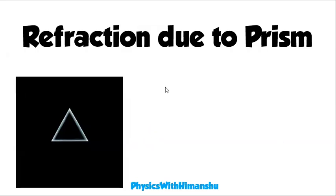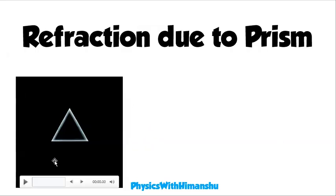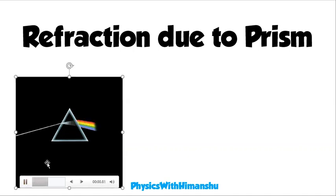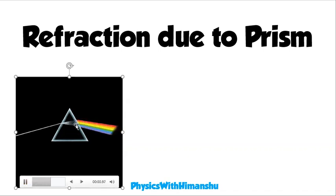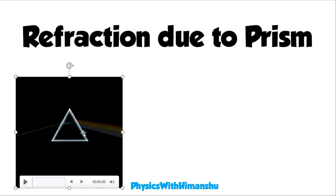Today's topic is refraction due to prism. What happens in the prism — suppose a white light passes through a prism, then the white light will get divided into seven component colors. We'll discuss why this happens and also try to find out what can be the minimum deviation when light passes through a prism.